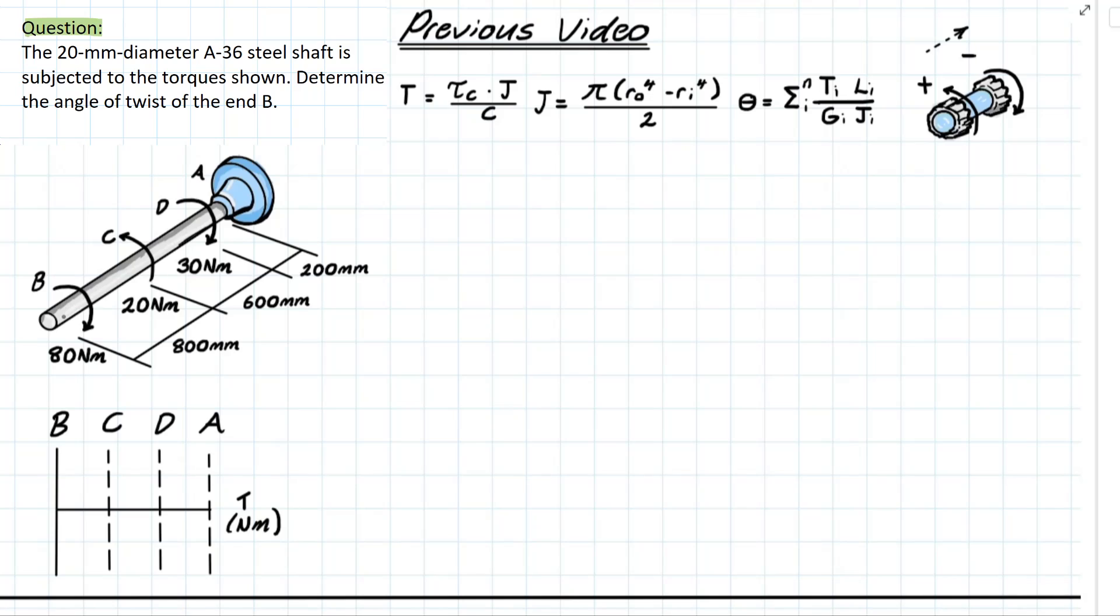So our first torque at point b being looked at is an 80 newton meter in the clockwise direction meaning that this is going to be negative based on our convention.